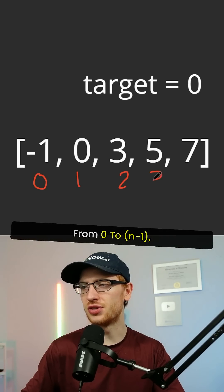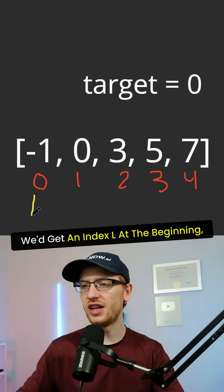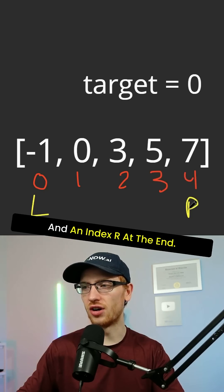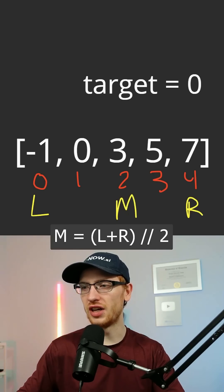If we have each of our indices from 0 to n minus 1, we'd get an index L at the beginning and an index R at the end. Then we'd iteratively calculate the middle, which is L plus R integer division by 2.